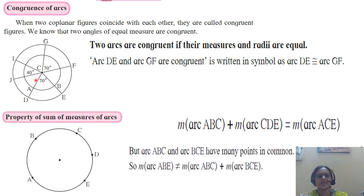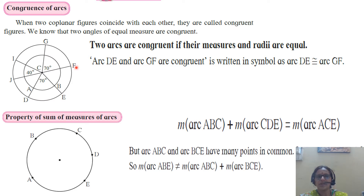Observe arc DE and arc GF. The central angle is the same — 70 degrees — for their corresponding arcs. So, we can say arc DE is congruent to arc GF.